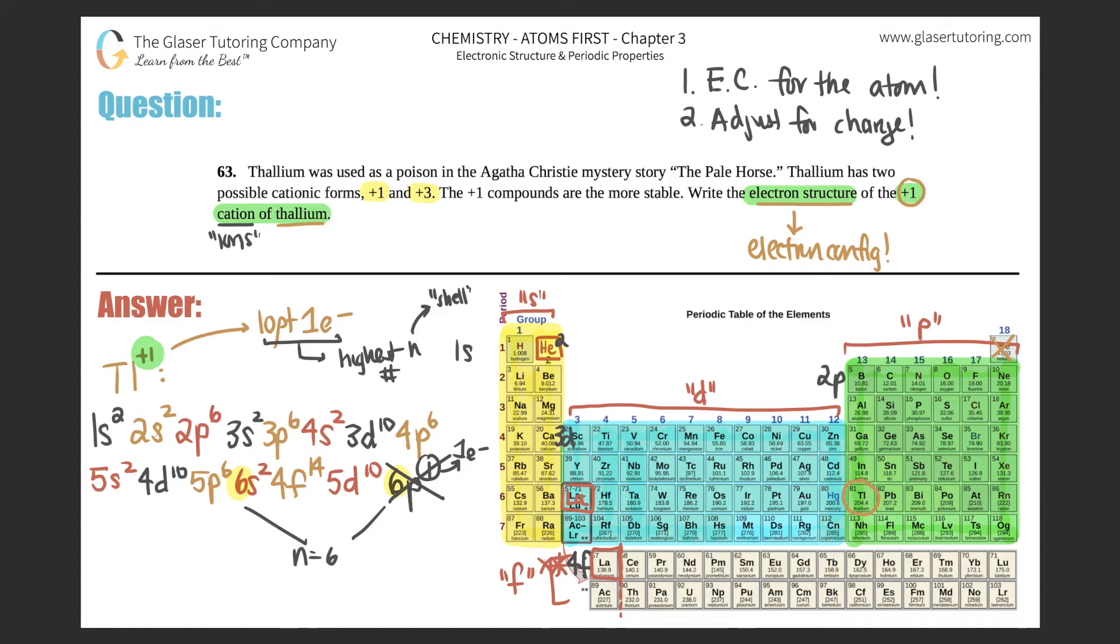So in this case, if I could just erase this, that would be the final answer. So just by erasing 6p¹, losing that one electron, this whole answer now, this electronic structure—if I box this off—that would be the electron structure or the electron configuration of thallium Tl⁺¹. And that's it. That answers the question. Easy peasy, right?